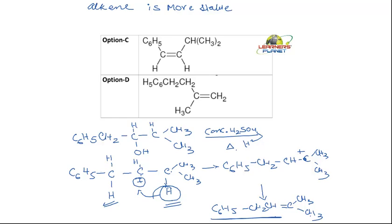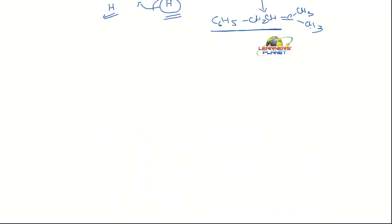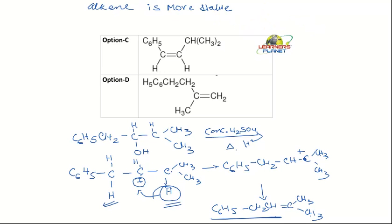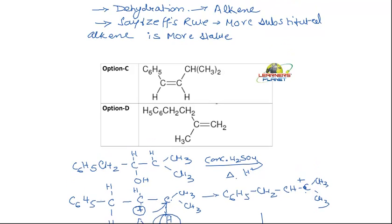What was our structure? C₆H₅ with OH being replaced — so there is a positive charge, that is the carbocation. This is less stable, so it will move. The carbocation forms, then there will be a double bond. So our option would be B — the right option here is B.